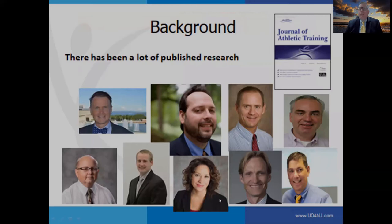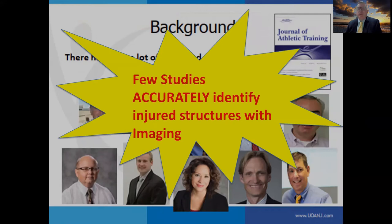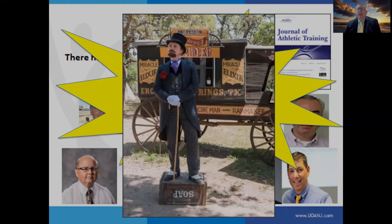There's been a lot of research published on chronic ankle instability, some by EATA members, published in the Journal of Athletic Training. However, few studies accurately identify the injured structures with associated imaging. MRI has been shown to be effective at identifying structures within injured ankles. If we're going to talk about a specific ankle injury, we need to make sure we identify it with appropriate imaging.